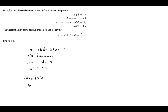Expanding this out, we get 4d squared plus 14d minus 30 equals 0, or 2d squared plus 7d minus 15 equals 0. We can factor this as (2d minus 3)(d plus 5) equals 0. So either d equals 3/2 or d equals negative 5.